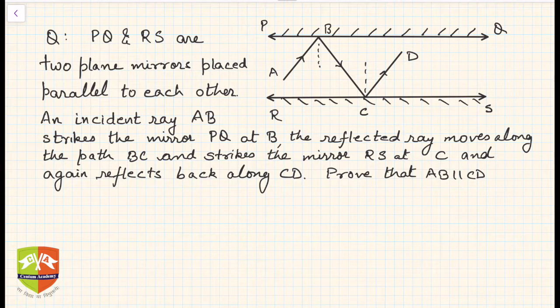The question is something like this: there are two plane mirrors PQ and RS, they are placed parallel to each other, and there's an incident ray AB which is striking the mirror PQ at point B and is getting reflected as ray BC.